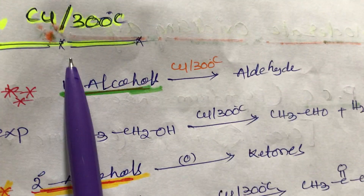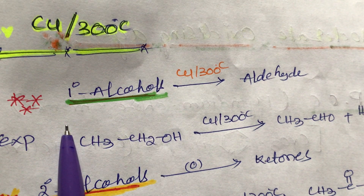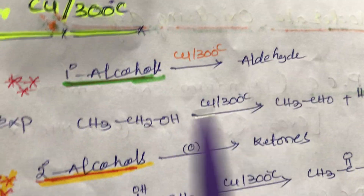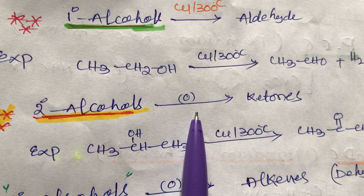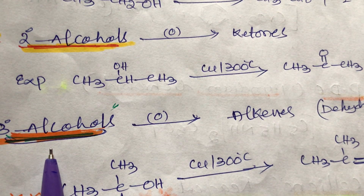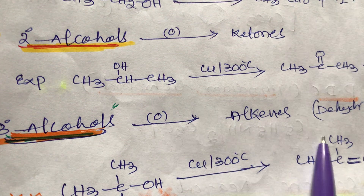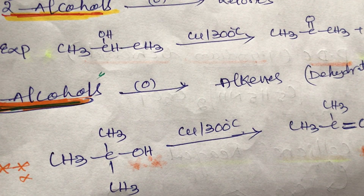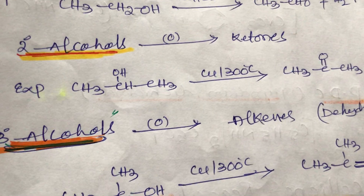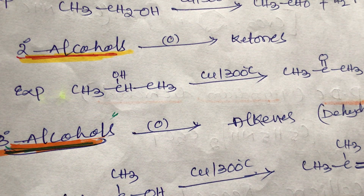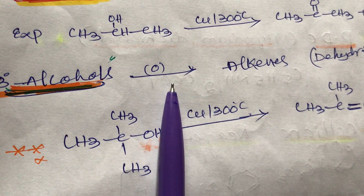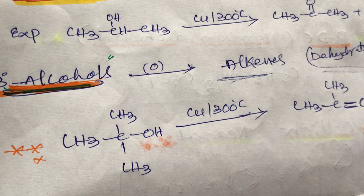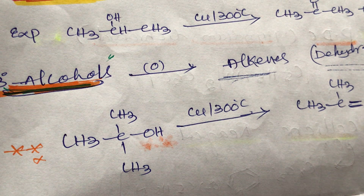Copper at 300°C is also a moderate reagent. Primary alcohols react with copper at 300°C to give aldehydes and H2 gas. Secondary alcohols react with copper at 300°C to give ketones. Tertiary alcohols react with copper at 300°C to give alkenes — this is called a dehydration reaction.